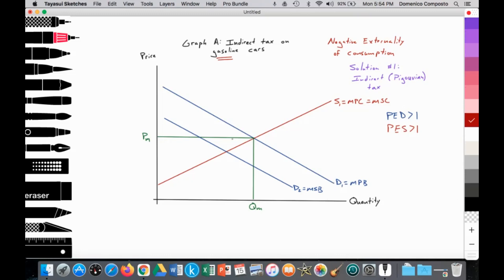And we notice, all right, when we compare point A to point B, we notice that at quantity in the free market, the marginal social cost, all right, point A, we're touching marginal social cost is greater than the marginal social benefit, which we see here, all right, that generates a welfare loss. Society would like less. There's an over allocation of resources to the production consumption of gasoline cars and society would like less.